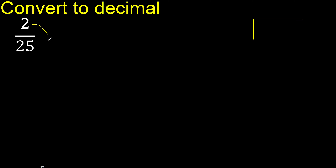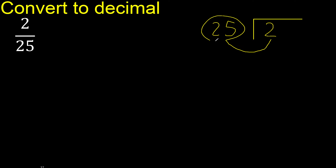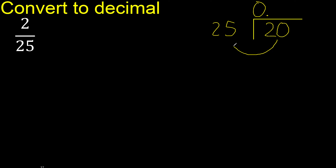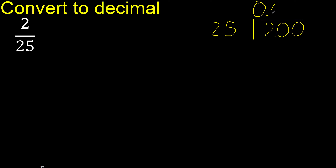2 divided by 25. 2 is less than 25, therefore complete — always complete with 0, here 0 point. 20 is less than 25, therefore complete: 0, 0.